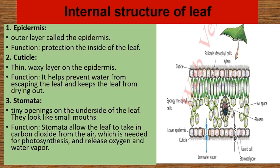4. Mesophyll — the leaf's main working area where photosynthesis happens. It has two layers: the Palisade layer, which is right under the upper epidermis and contains lots of chloroplasts — tiny factories that use sunlight to make food for the plant — and the Spongy layer, which is below the palisade layer and has air spaces between its cells that help with gas exchange, taking in carbon dioxide and releasing oxygen.